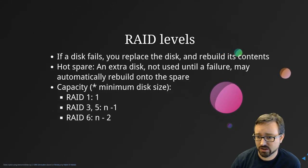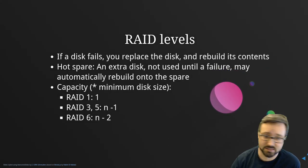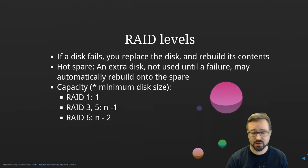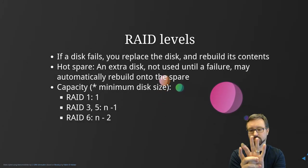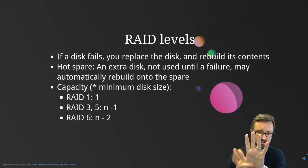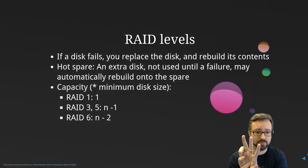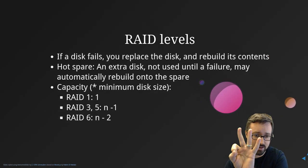Regarding capacity: with RAID 1 you have two hard drives but only the capacity of one. With RAID 3, capacity equals the number of drives minus one, since one drive stores parity — so with four drives you get the capacity of three, and with five drives you get the capacity of four. With RAID 6, because you store two parity blocks, capacity equals the number of drives minus two — so with five disks you only have the capacity of three.